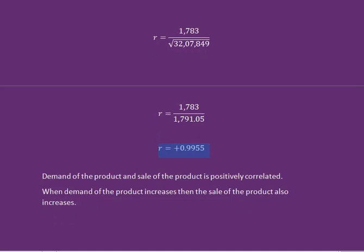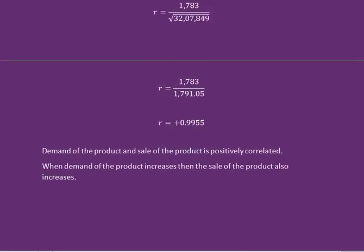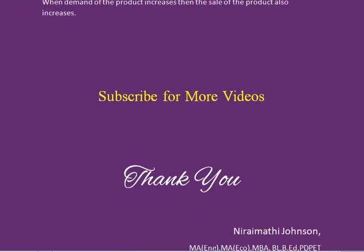The value of R is positive at 0.9955. This means demand of the product and sale of the product are positively correlated — when demand of the product increases, the sale of the product also increases. Thank you.